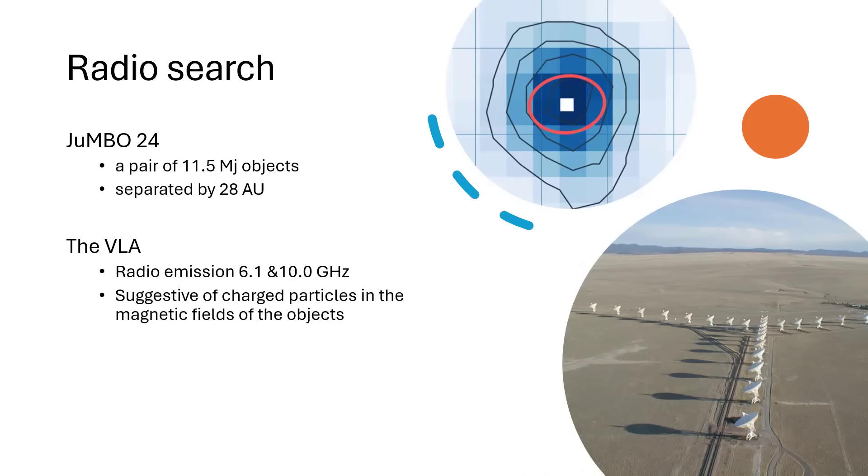The radio map at the top there is homing in on Jumbo 24, and the white square in the center is where we think Jumbo 24 was, so it seems well centered on it. We're thinking that Jumbo 24 might be a pair of quite large 11.5 Jupiter mass objects, just 28 AUs apart, so close and on the large side. That's what happens when you first go looking for things, you find the ones that are easy to find.